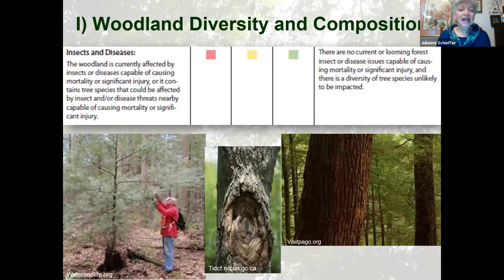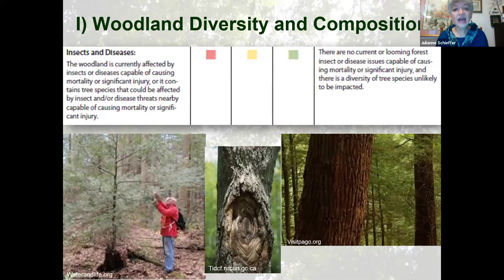Next is insects and diseases. We're looking here at hemlock woolly adelgid, which will be readily apparent if you have sparse crowns or tiny leaves showing that something is happening. The middle picture is nectria canker — I've seen forests that are just riddled with it, showing up as poor form with a lot of breakage. Whereas on the right, you've got no current or looming forest insect or disease issues, and so you choose on the green side.